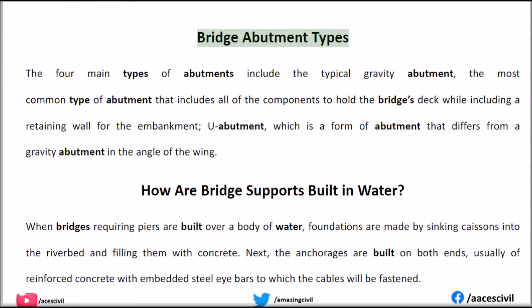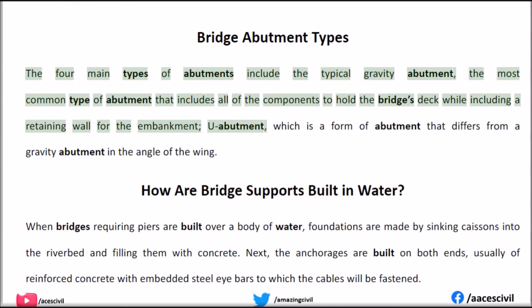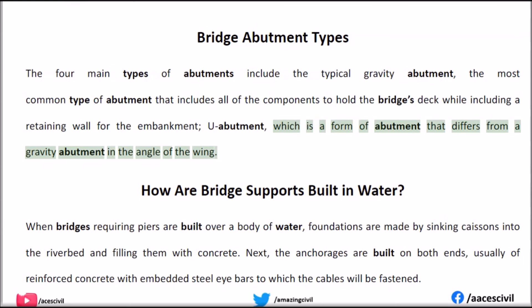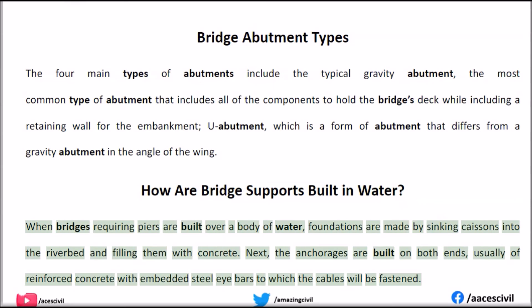The four main types of abutments include a typical gravity abutment, the most common type that includes all of the components to hold the bridge deck while including a retaining wall for the embankment. When bridges requiring piers are built over a body of water, foundations are made by sinking caissons into the river bed and filling them with concrete. The anchorages are built on both ends, usually of reinforced concrete with embedded steel eye bars to which the cables will be fastened.